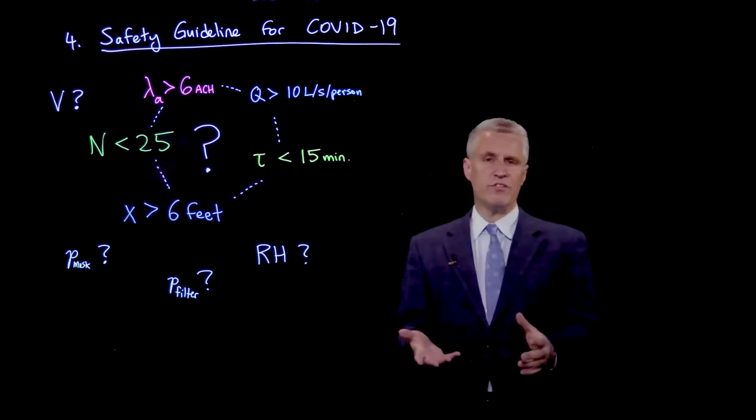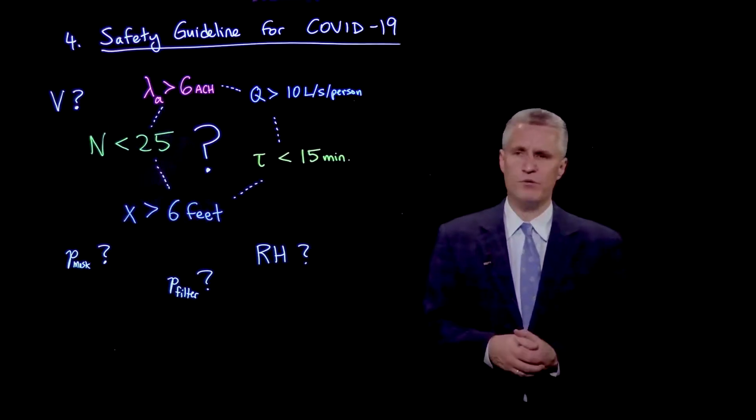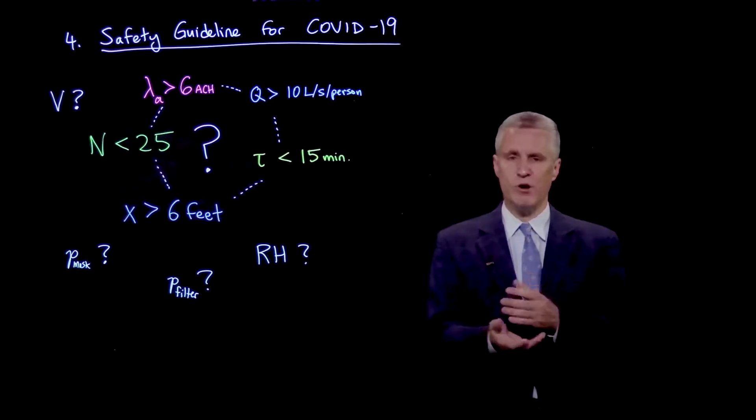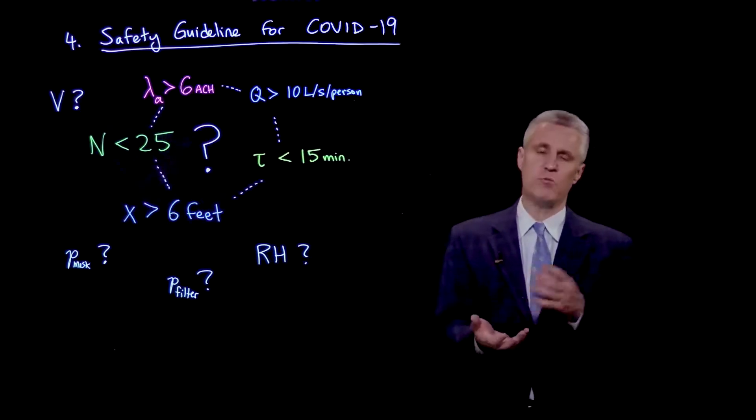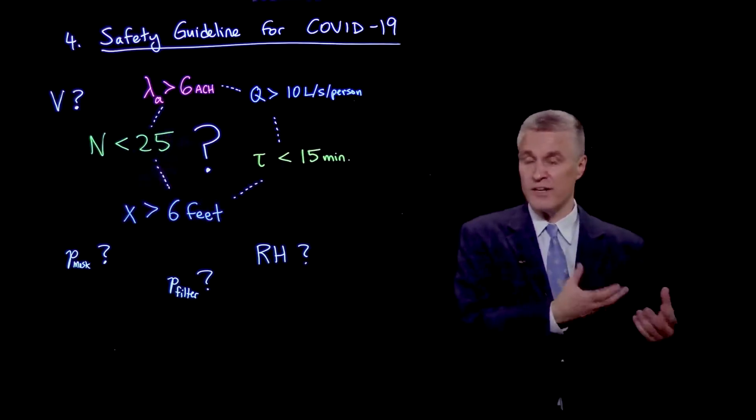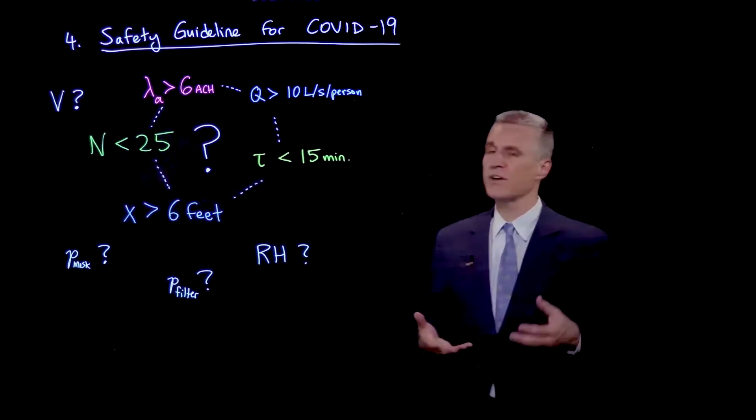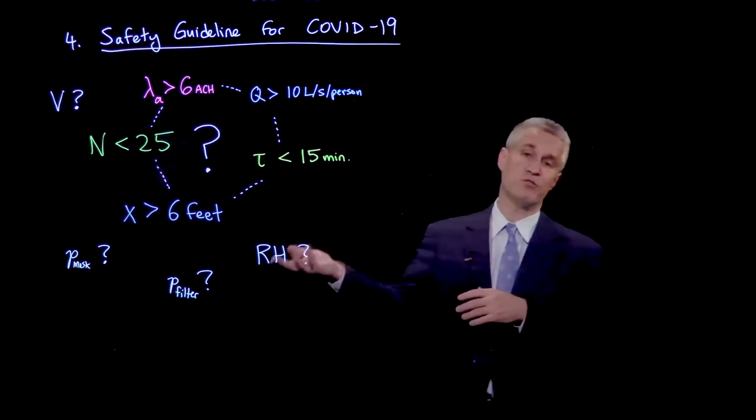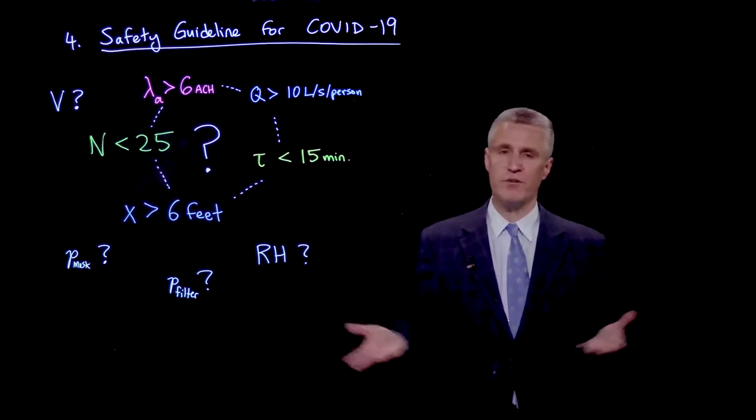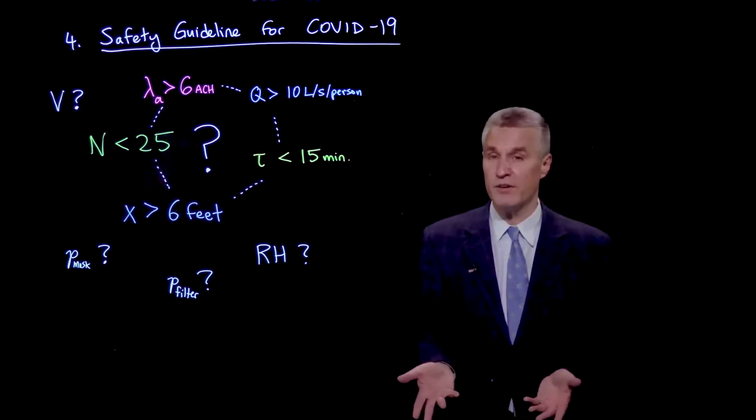So what we will see is that it's really not possible to write down a realistic guideline that bounds any one quantity, because there will always be situations where you either are too conservative or are not careful enough in bounding that quantity, because these quantities are all related. For example, 25 persons might be perfectly safe in a very large space for a very short amount of time with very high ventilation.